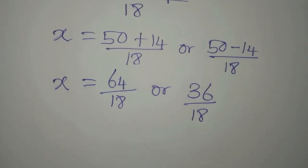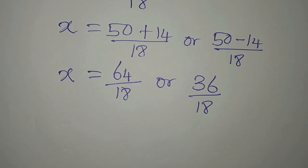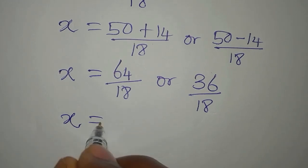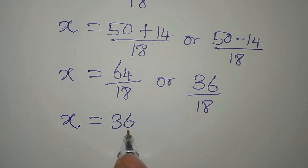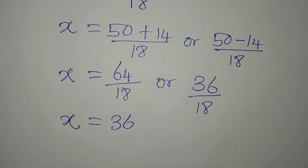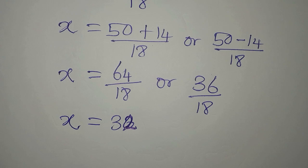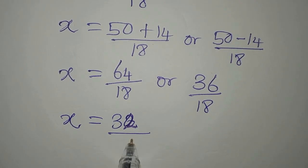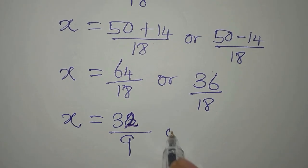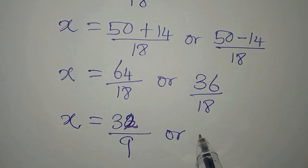So from here, we're going to have the solution. Our x will give us 64 divided by 2 is 32, and 18 divided by 2 is 9, so we have 32/9. Then on the other side, 36 divided by 18 gives us 2.